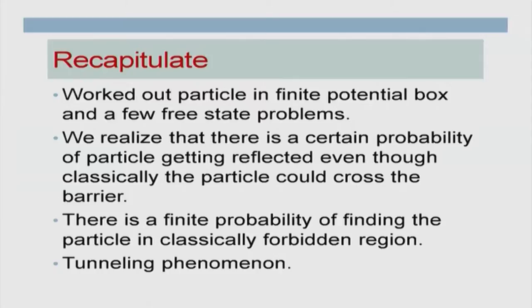We also discussed, rather briefly, a tunneling phenomenon — a very important phenomenon which does not have a classical analog. Here you can have a small separation of a classically forbidden region, and because the particle has a finite probability of being found there, if this region is thin enough, you can have a reasonable probability of the particle crossing to another area. Once the particle crosses, because that area is no longer classically forbidden, the particle can keep on propagating.